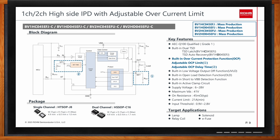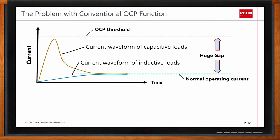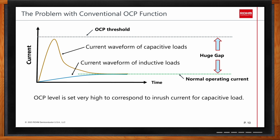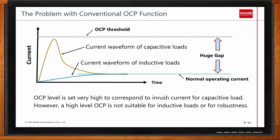Overcurrent protection circuits can have several issues. The preset overcurrent protection value is typically set as high as possible to allow the inrush current of capacitive loads to flow. However, a high overcurrent protection value is not suitable for inductive and resistive loads, which do not have a large inrush current. If the overcurrent protection value is too high, abnormal load current during normal operation may not be detected, which may cause the load to become damaged. Additionally, a high overcurrent protection limit requires thicker PCB traces, which increases PCB cost.